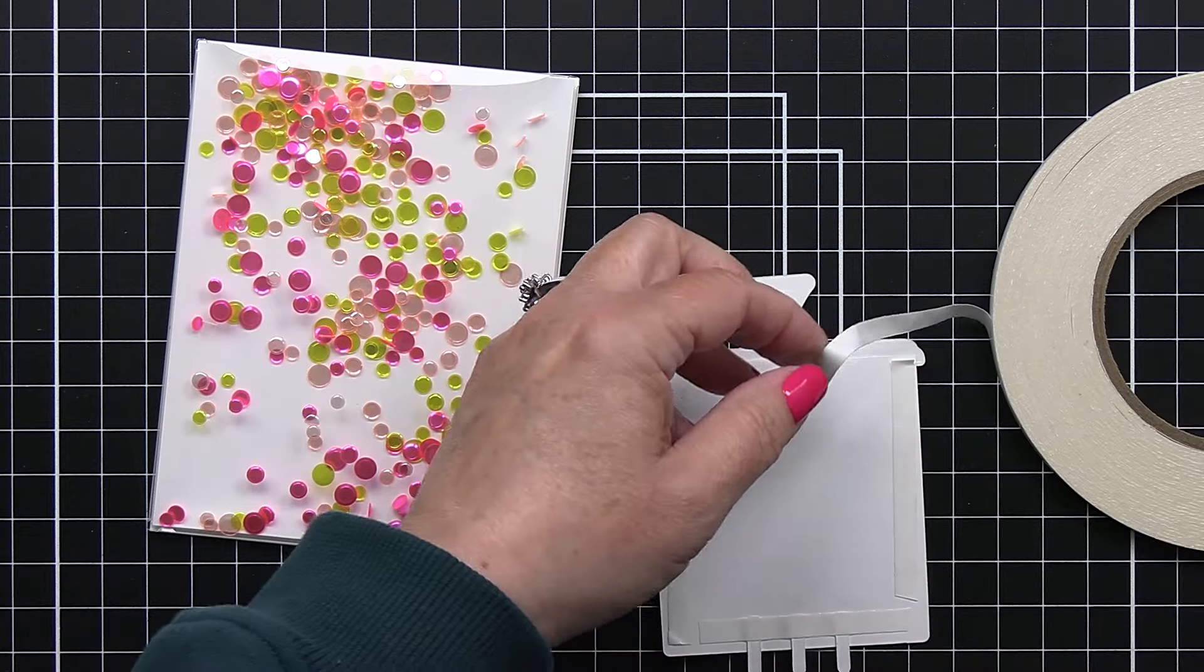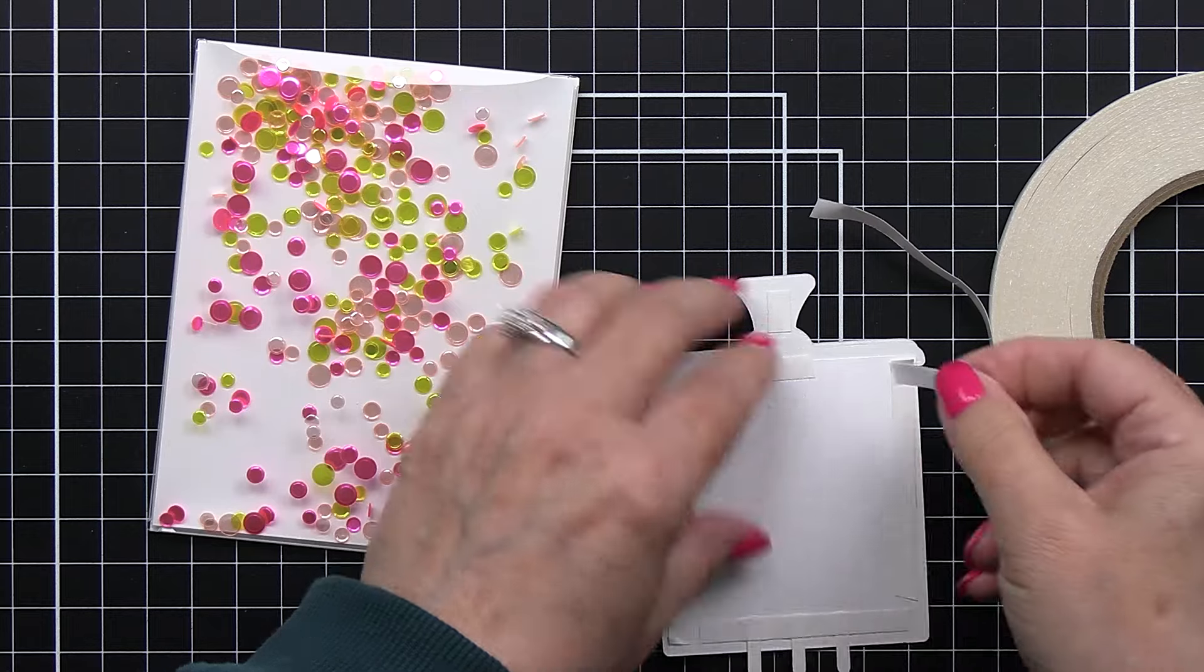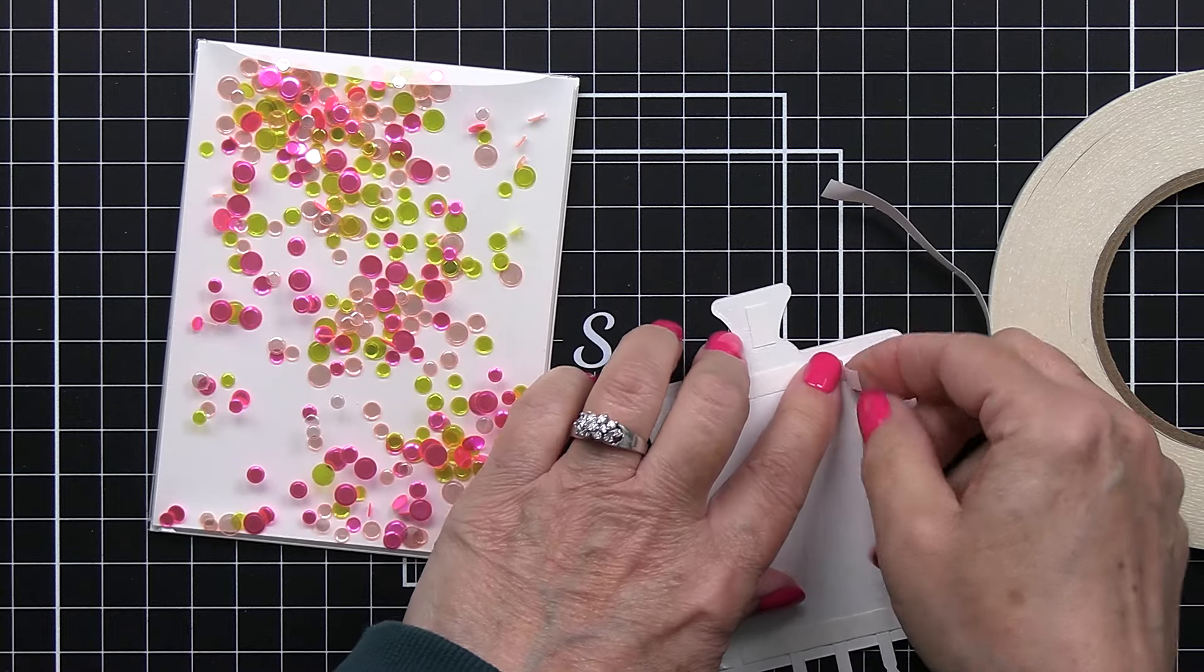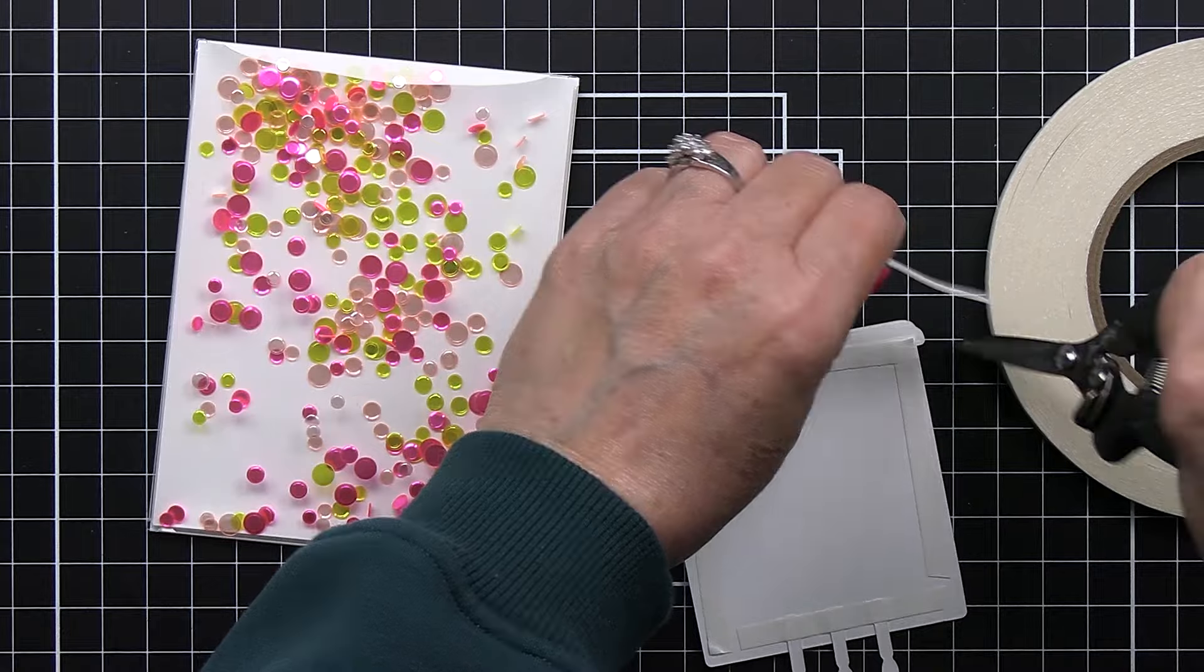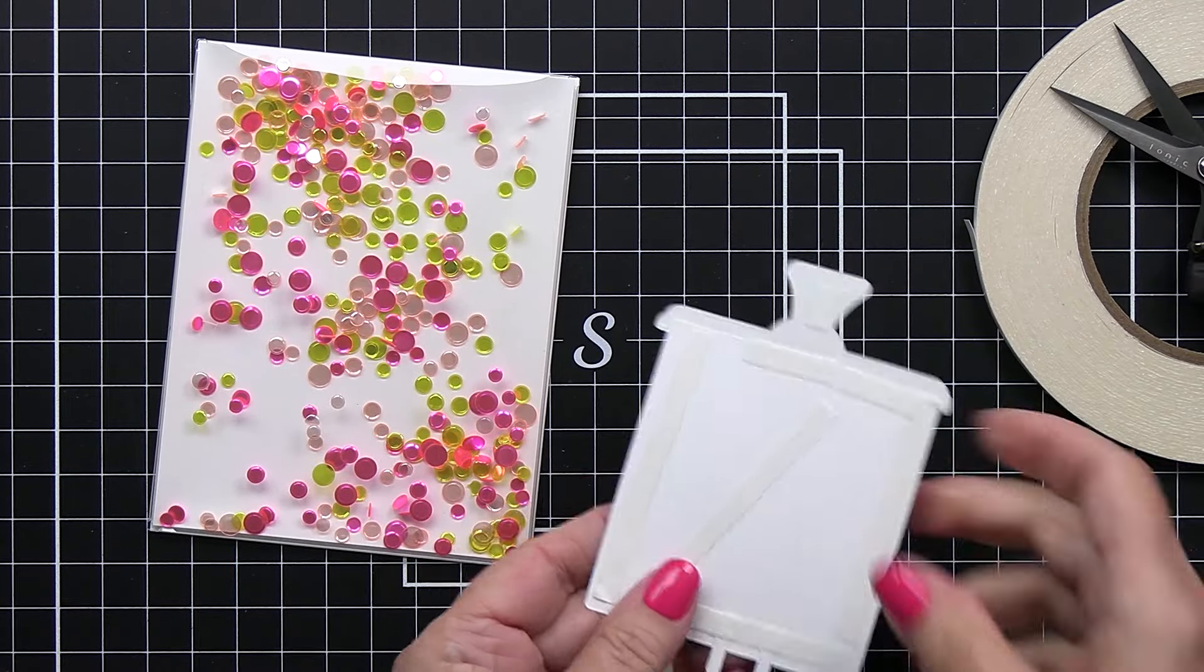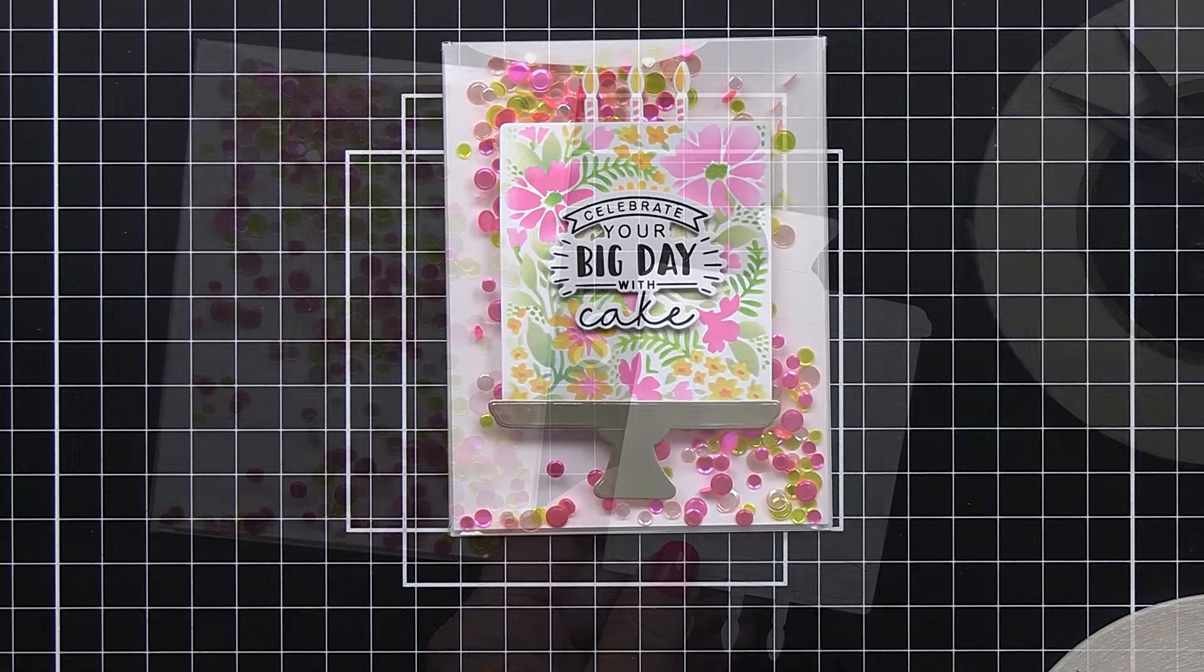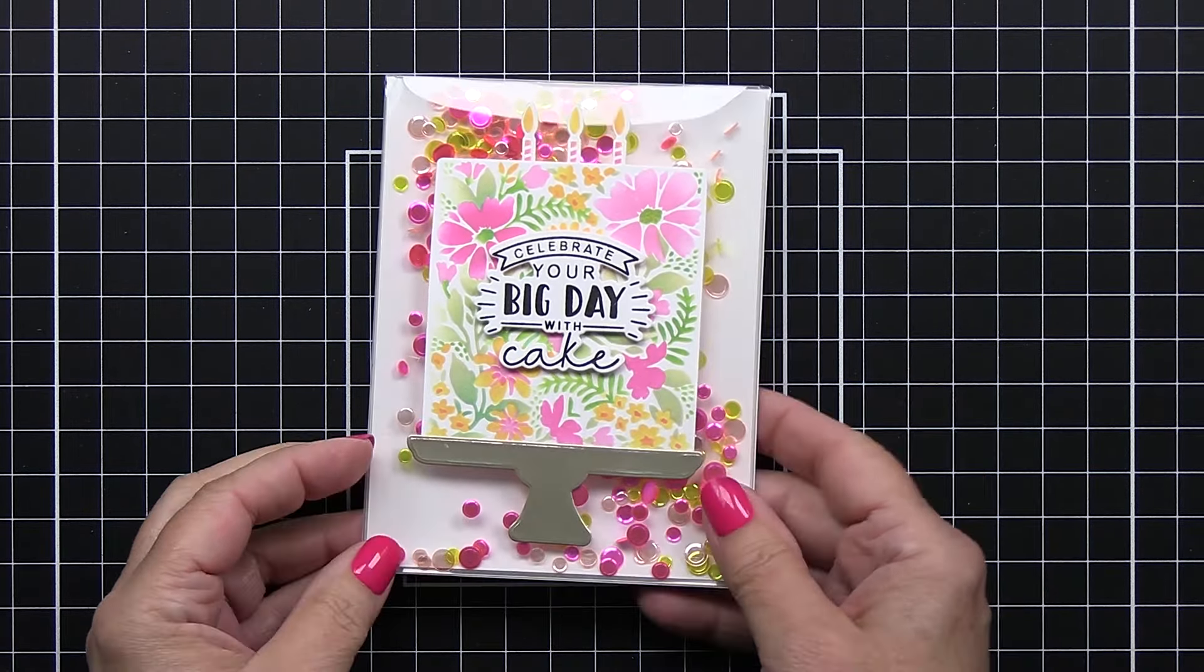Now I am going to use some double-sided really sticky tape for adding this piece onto that shaker base and this is just a really great adhesive for adding onto something like the shaker pockets which are acetate. I'll just take that release paper off and then add that onto my card front and that's going to finish my card.